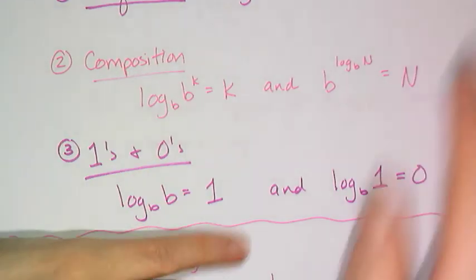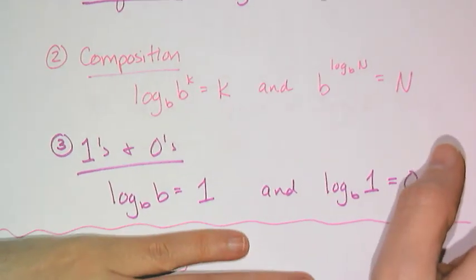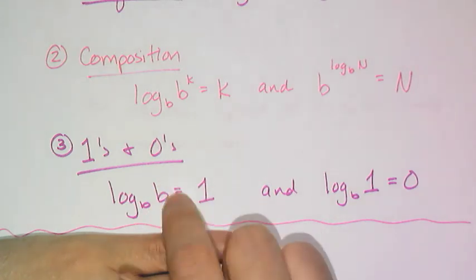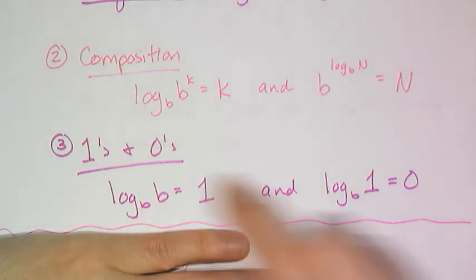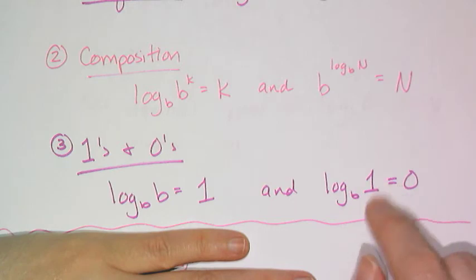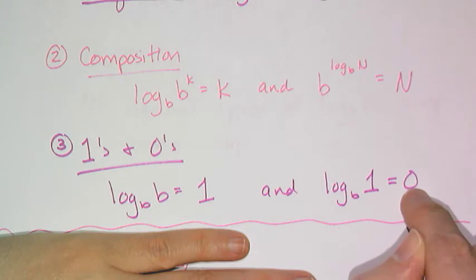Just like we had exponent rules for ones and zeros, log base b of b is always 1 because b to the first power is b, and log base b of 1 is going to be 0 because b to the 0 power is 1. I know this takes a little bit of getting used to, but remember, the subscript is the base, this output is the exponent, and that is the result.